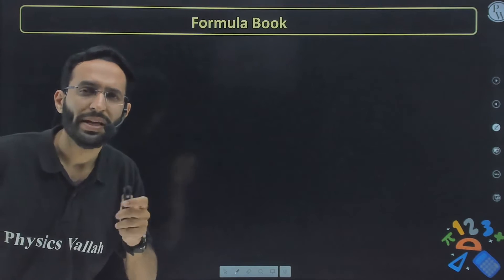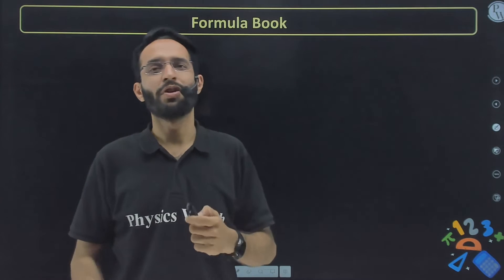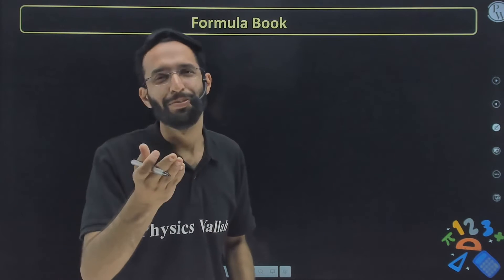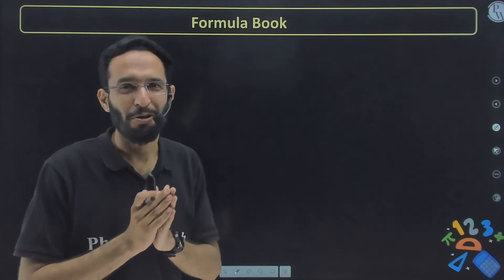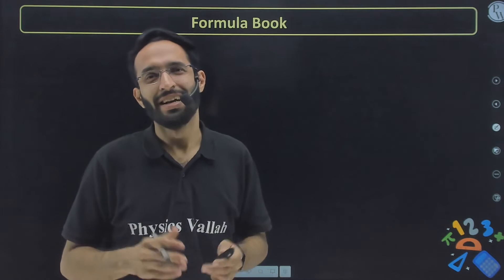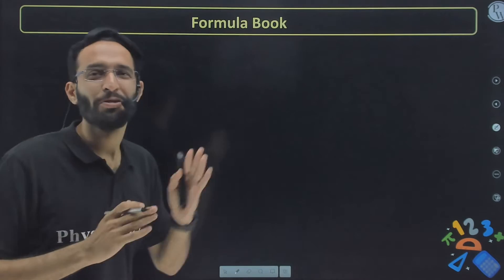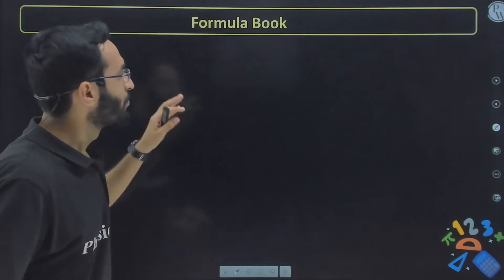Next, very next mistake that I have seen: students are not making formula book in mathematics. I still remember one of my students from 2022 batch, I offered him bribe. Yes, I told him that please make formula book, I'll give you 20,000 rupees. And see, those 20,000 rupees are still in my pocket.